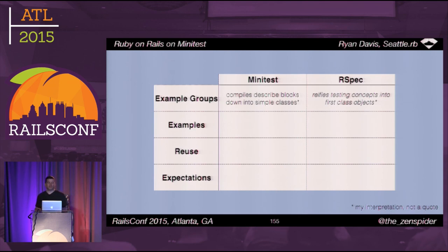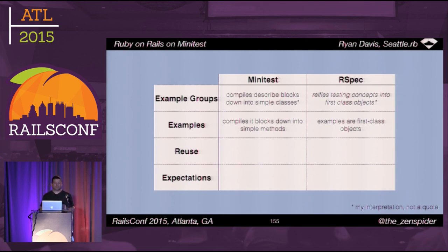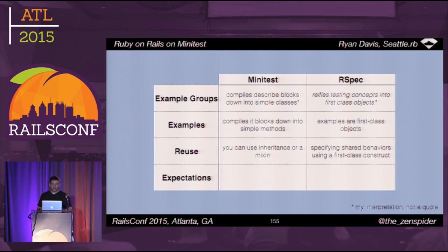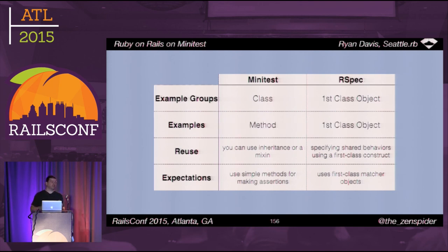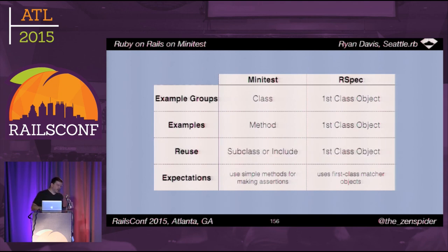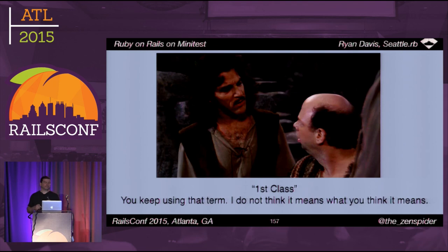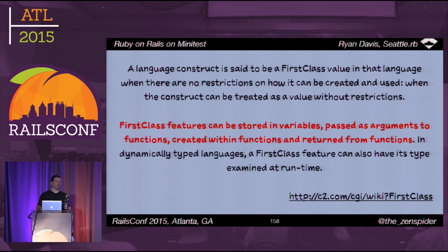Boiling it down further: Minitest uses a class — they use a first-class object. Minitest uses a method — they use a first-class object. Minitest uses subclasses or include — they use a first-class object. Minitest uses method calls — they use a first-class object. First-class simply means you can assign something to a variable and use it like any other value — and it just so happens that everything Minitest uses is Ruby, and nearly everything in Ruby is first-class. Everywhere I could use Ruby's mechanisms, I did. Everywhere RSpec could reinvent, they did.